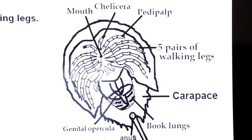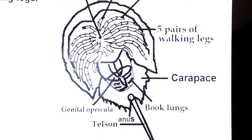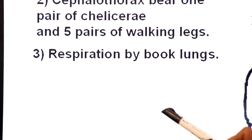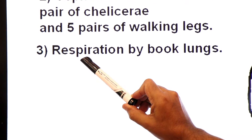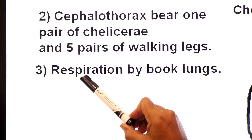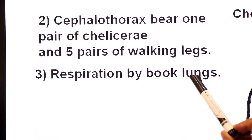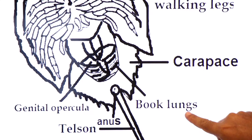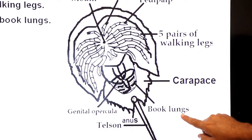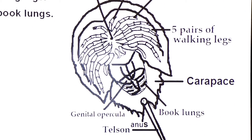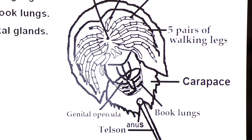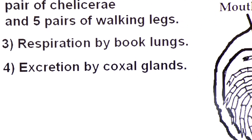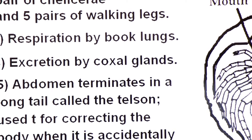The cephalothorax bears five pairs of walking legs. Their respiratory organs are book lungs — respiration takes place by book lungs. They are called book lungs because they look like folded books. Excretion takes place by coxal glands.